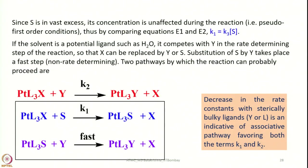Since the solvent S is in large excess, its concentration is essentially unaffected during the reaction. Hence it can be treated as a pseudo-first-order condition. By comparing the two forms of the rate equation, we get k1 = k3[S]. If the solvent is a potential ligand such as water, it competes with Y, the entering group, in the rate-determining step, so that X can be replaced by either Y or S. Substitution of S by Y then takes place in a subsequent non-rate-determining step.